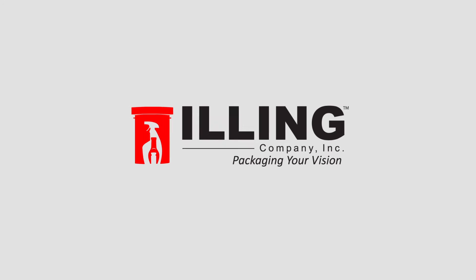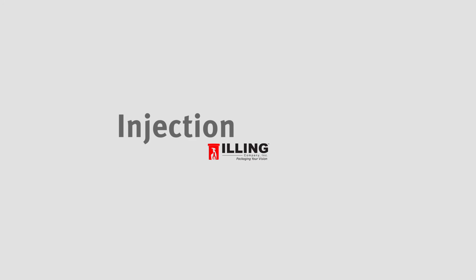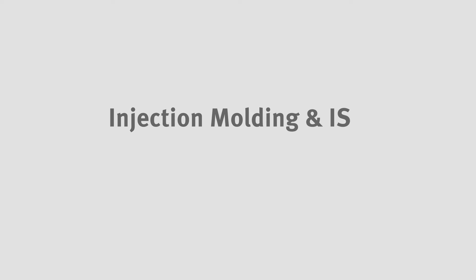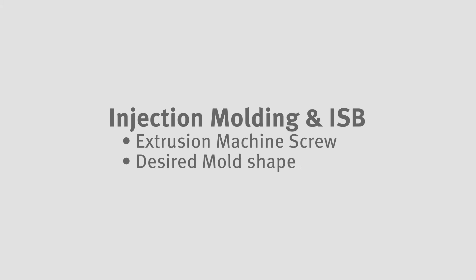Let's explore the difference between injection molding and injection stretch blow molding, or ISB. With both injection molding and injection stretch blow molding, plastic pellets are melted and pushed through an extrusion machine screw, which forces them into a desired mold shape. What differentiates them is how the part is formed once the plastic is pushed through the screw.